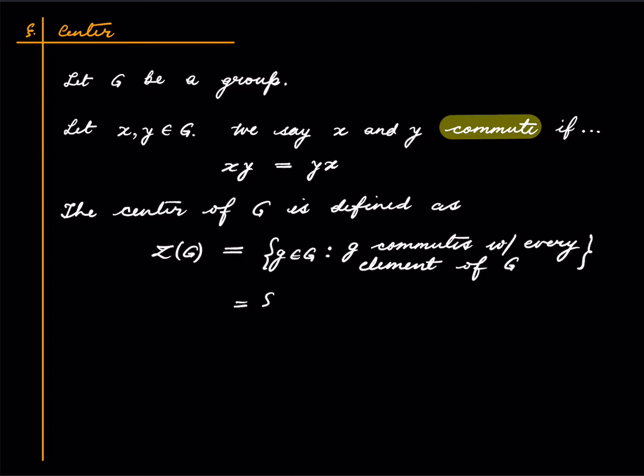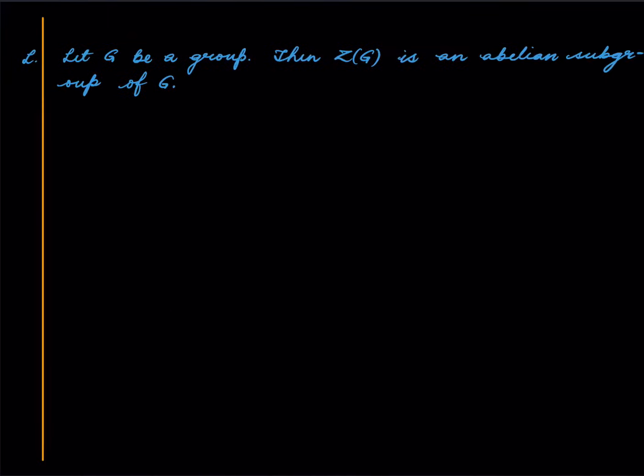So another way to write this would be g in G such that gx equals xg for all x in G. So that's the center of a group and here is a property.